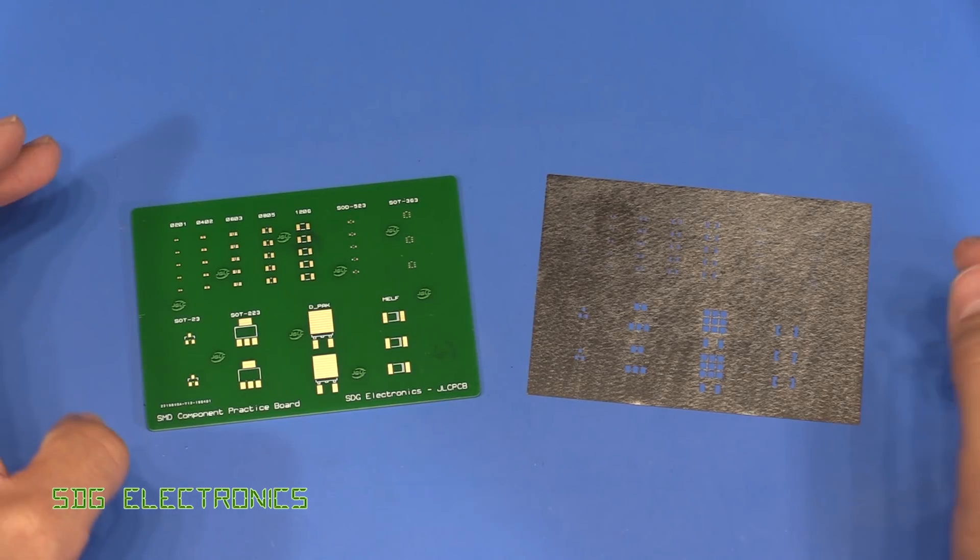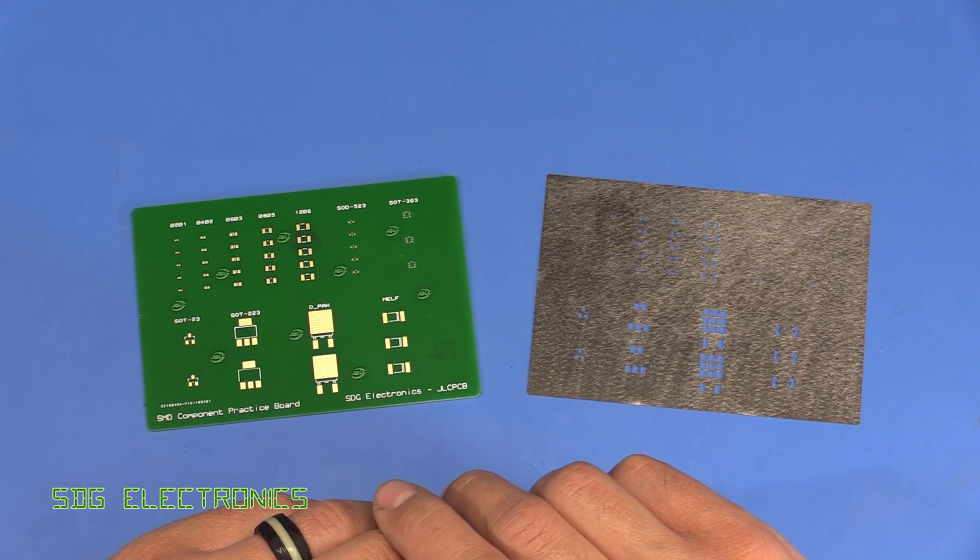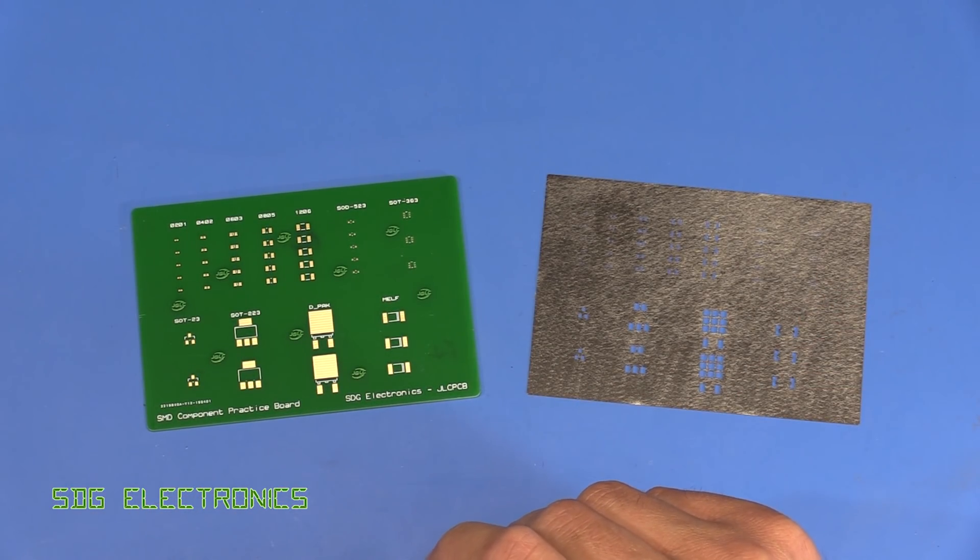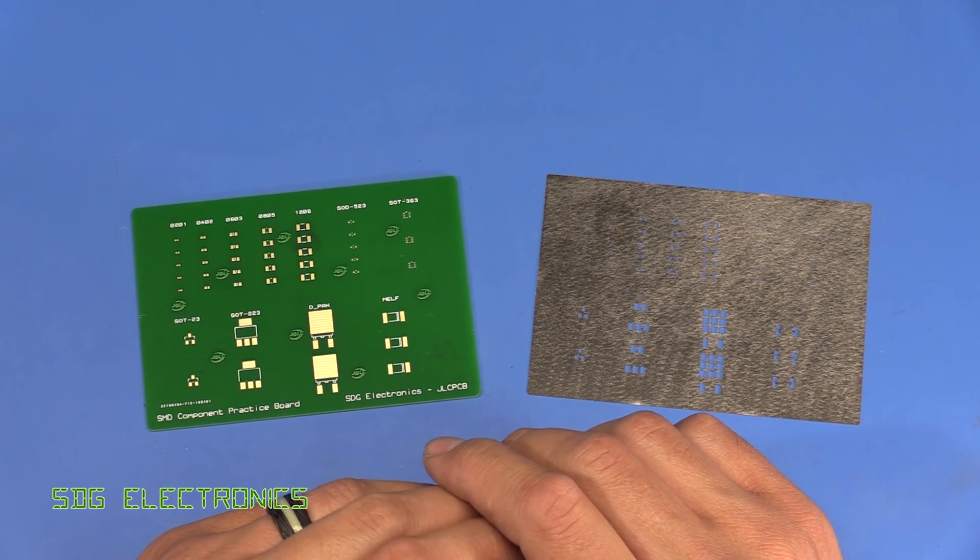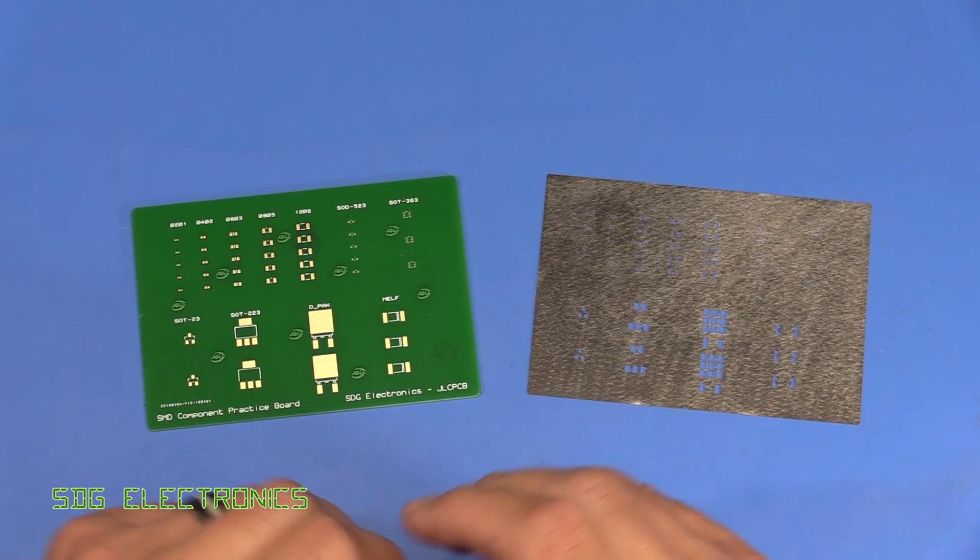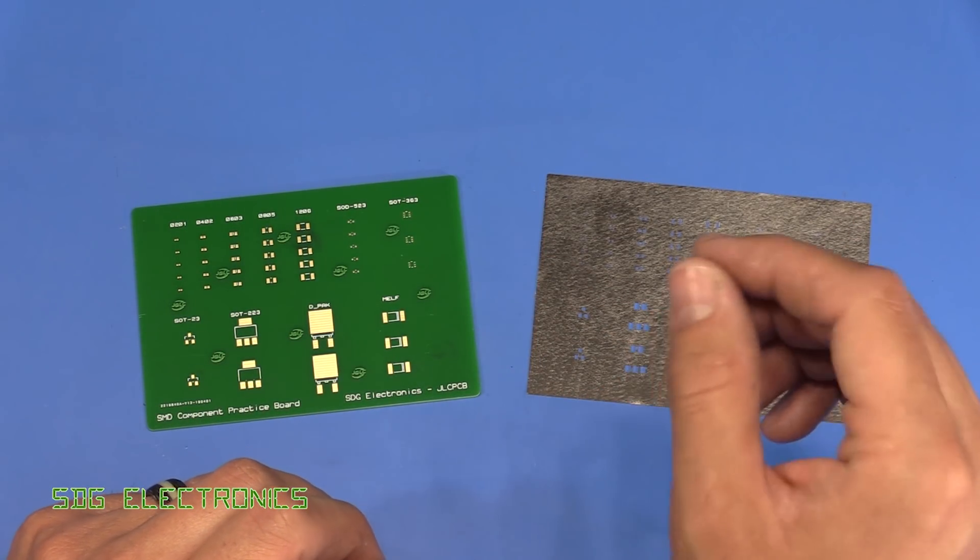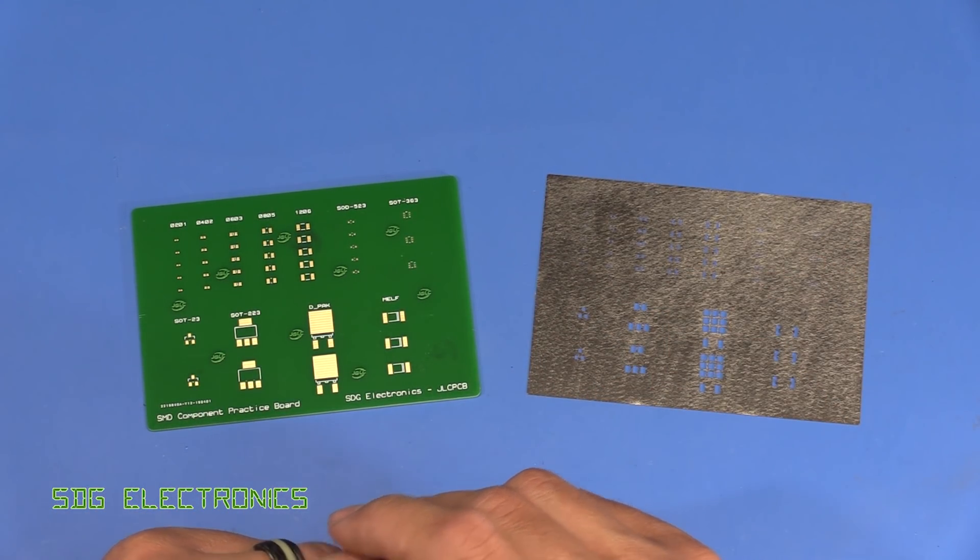Hi, in this video we're going to have a look at assembling a surface mount board with a solder stencil. This time we're going to do this using the infrared preheating station that I looked at in my previous video. We're going to get the board up to temperature and then just finish off the reflow process with the hot air gun.